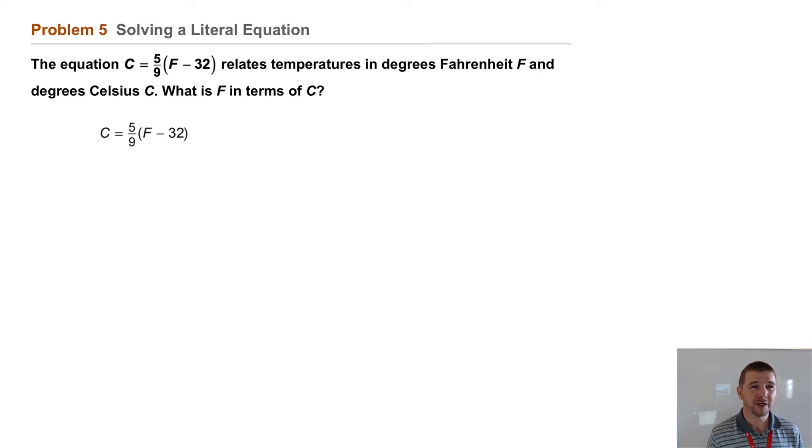I'll start with the equation C = 5/9(F - 32) and use inverse operations to isolate F. First, we'll multiply each side by 9/5.